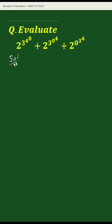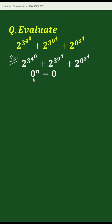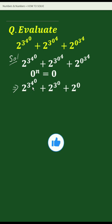Solution: let's first copy down the expression. We already know that 0 to the power n equals 0. So we can write this expression as 2 to the power 3 to the power 4 to the power 0, plus 2 to the power 3 to the power 0, plus 2 to the power 0.